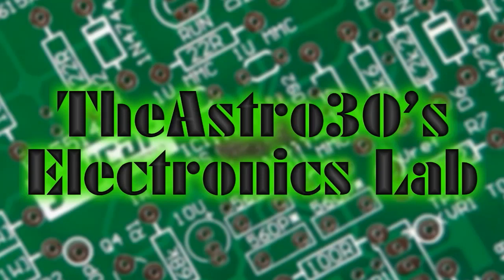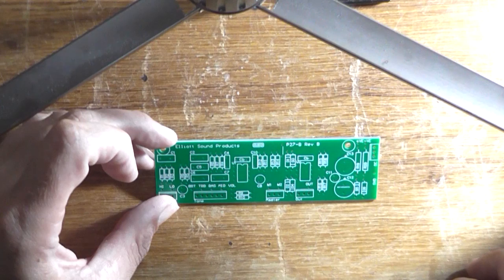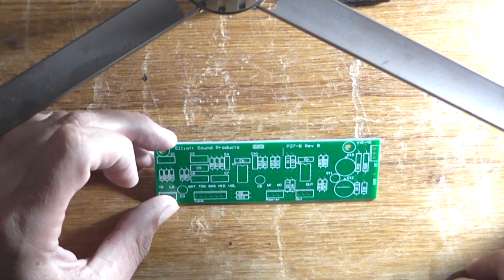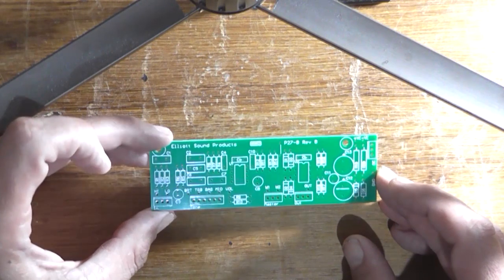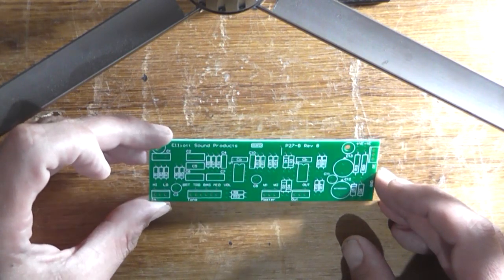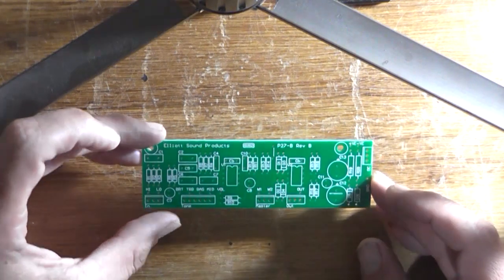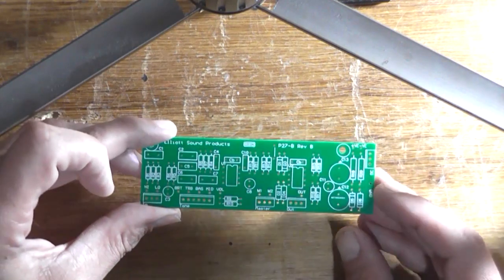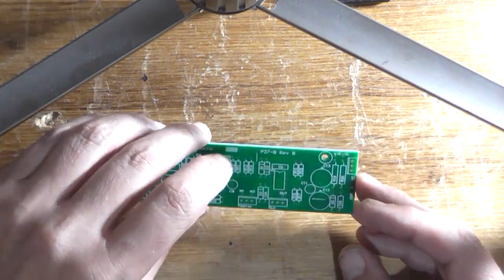Greetings, Astro 30 here. You can tell by the title I'm building a guitar preamp today. It's designed by ESP or Elliot Sound Products by Australian electronics engineer Rod Elliot. There's a link in the description to the whole project which covers the power amp, but I'm just building the preamp.